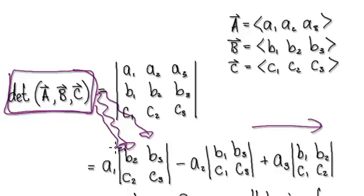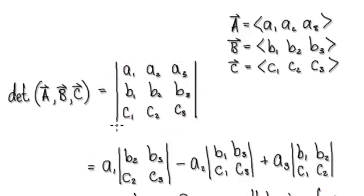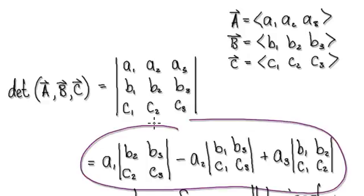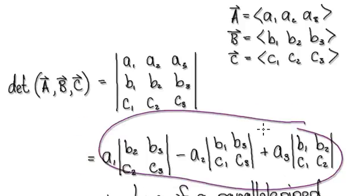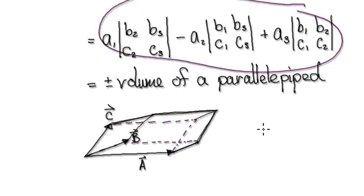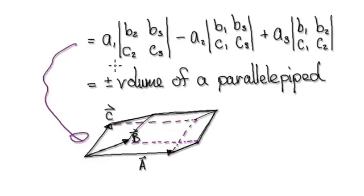To work out the determinant of this matrix, you follow the same process. The value of the determinant could be positive or negative, but if you take the absolute value it gives you the volume of the parallelepiped. You don't need to know why it gives the volume right now — just accept it.